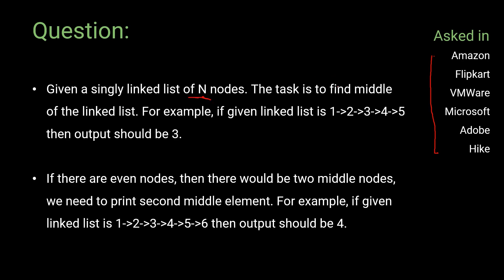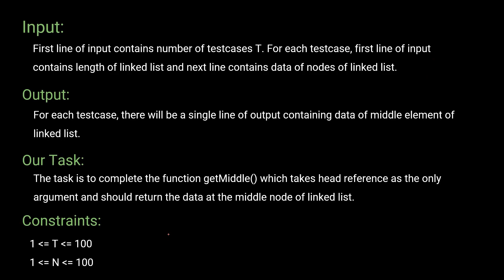We are given a singly linked list of N nodes and the task is to find the middle of the linked list. For example, if given a five-node list, the middle element should be the one at index two. If there are an even number of nodes, there will be two middle nodes, and the output should be the second middle element.